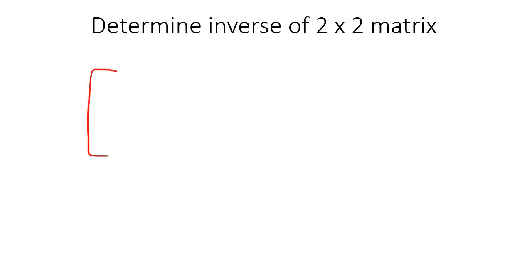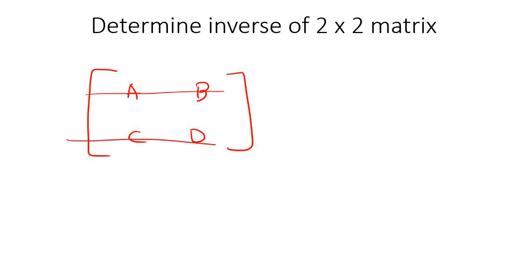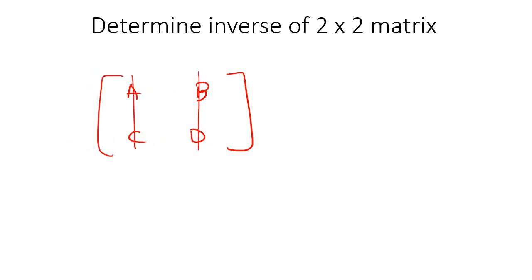In this lesson, we are going to determine the inverse of a 2x2 matrix. A 2x2 matrix is when you have two rows and two columns — a number here, a number here, a number here, and a number here. So it's got two rows and two columns. We call that a 2x2 matrix.